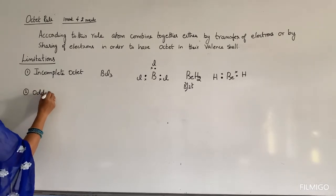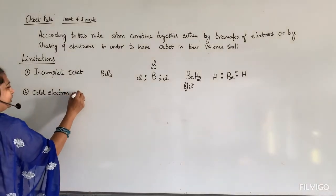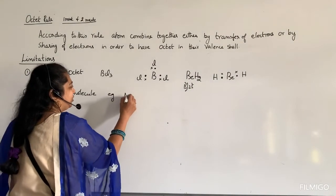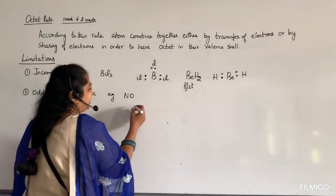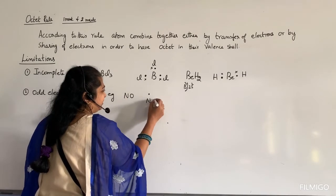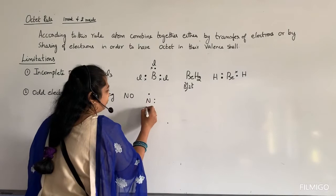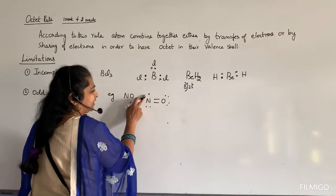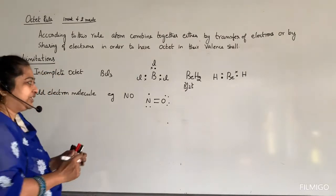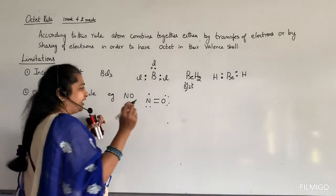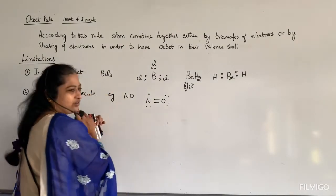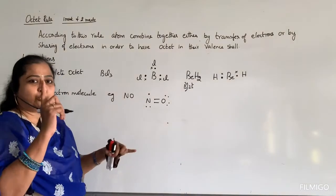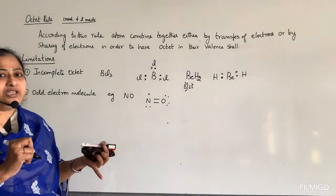The second limitation is odd electron molecules. Some atoms have an odd number of electrons. For example, nitric oxide (NO) — nitrogen has 5 electrons and oxygen has 6 electrons in their outermost shells. When they share 2 electrons, nitrogen still contains 1 odd electron and does not satisfy the octet rule. Another example is NO2: nitrogen combines with oxygen, but nitrogen has only 7 electrons in the outermost shell — it does not have 8 electrons. So the octet rule does not apply here.